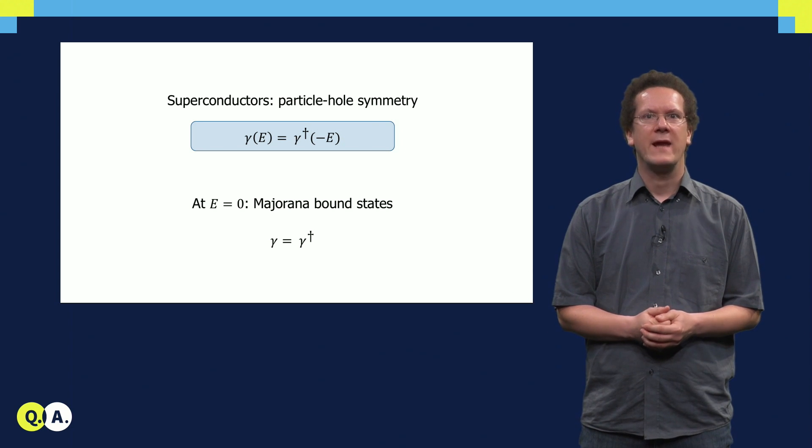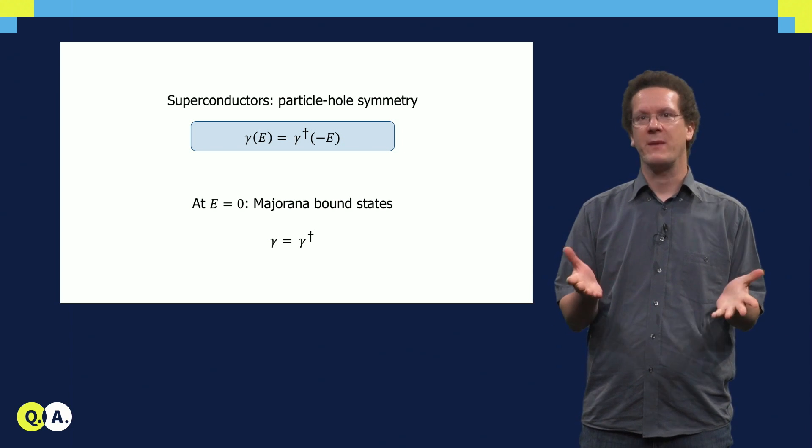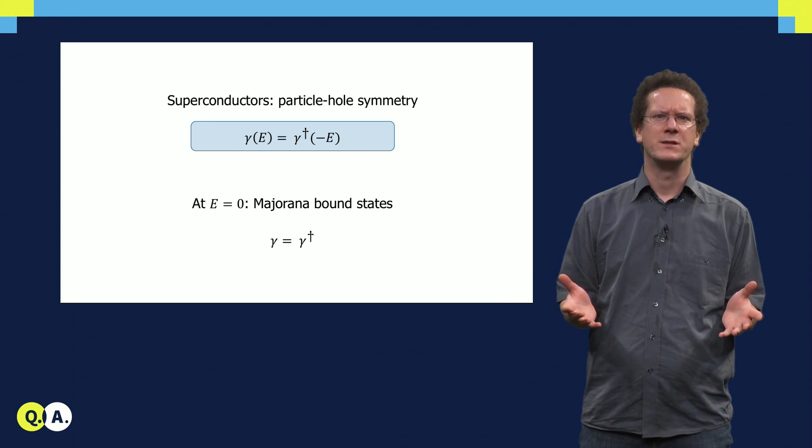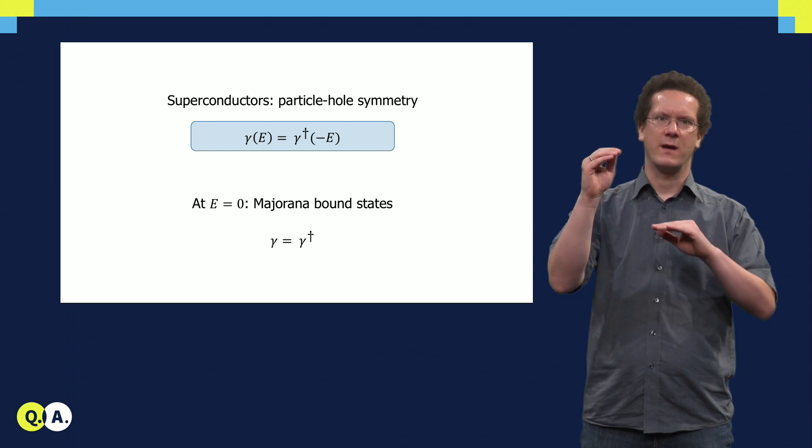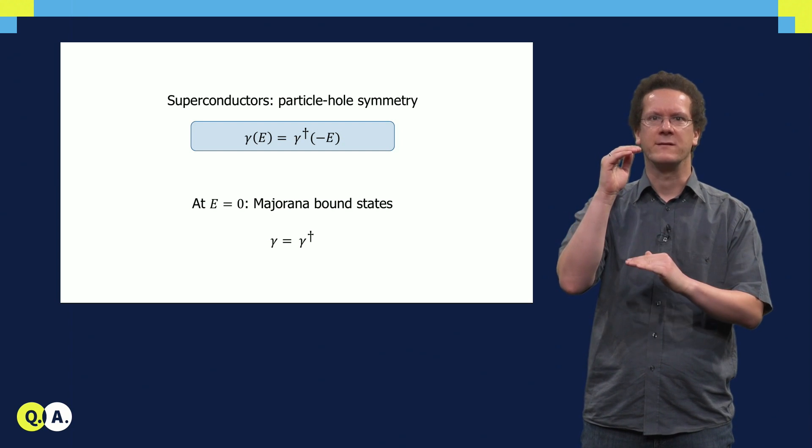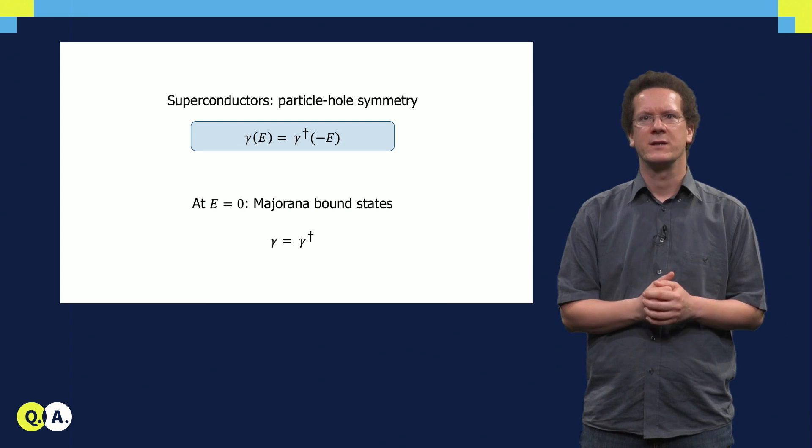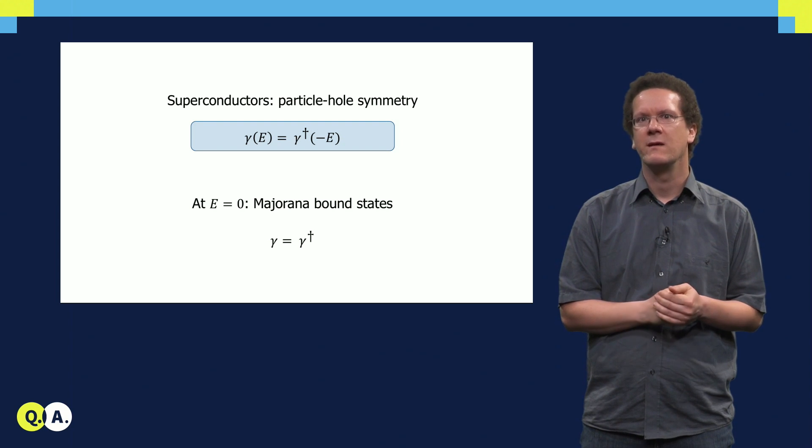The blurring of electron and hole can be described mathematically as a so-called particle-hole symmetry. For a particle at energy E, you must have an antiparticle at energy minus E. That is given by this formula here, with the annihilation operator gamma at energy E equals the creation operator at energy minus E.